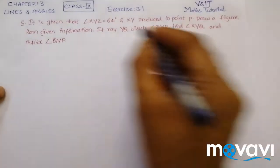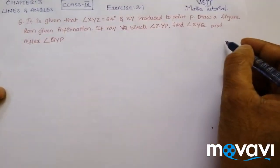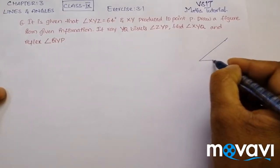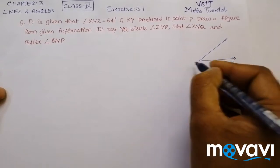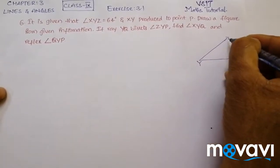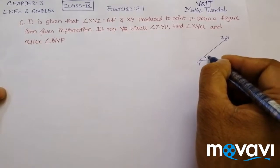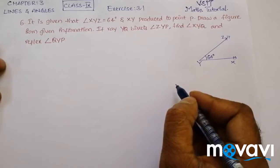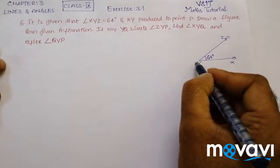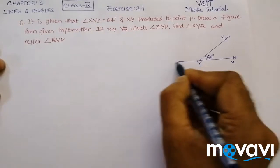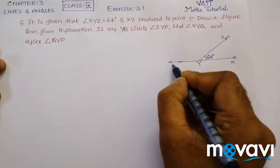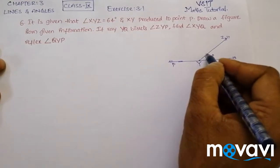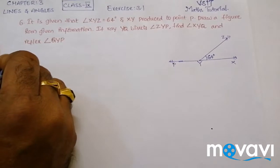Let us draw Angle XYZ that is equal to 64 degrees. This is line XY, and it is produced — extended — to point P. By this, we can see what exactly the angle here is. Let us write the solution for this.